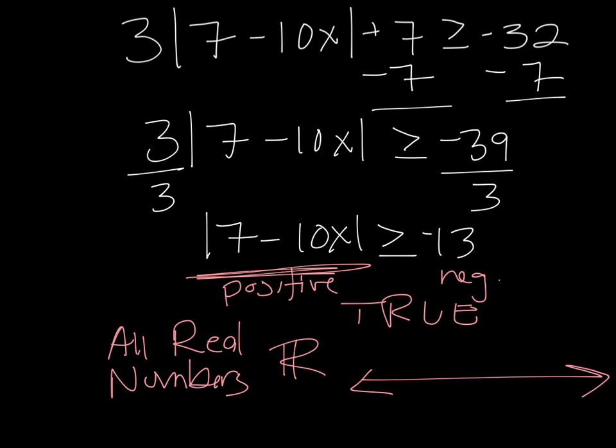And if we can graph this, we'll throw 0 on there. And we're going to say that this is going in both directions forever. All real numbers. The whole number line should be shaded.